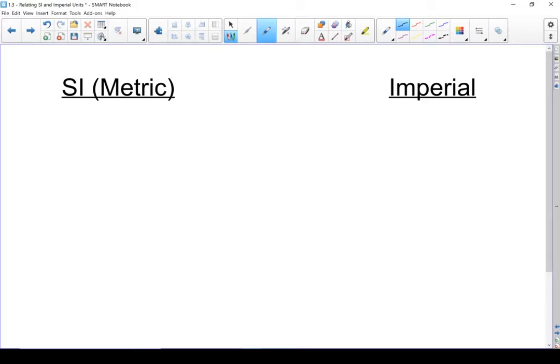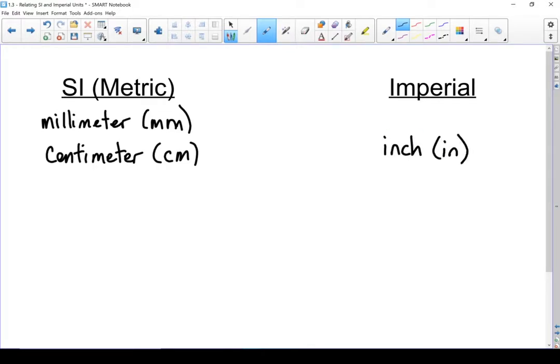On metric we have the millimeter, short form mm. Next we have the centimeter, short form cm. Over on the imperial side the closest thing to a centimeter is an inch, short form in.